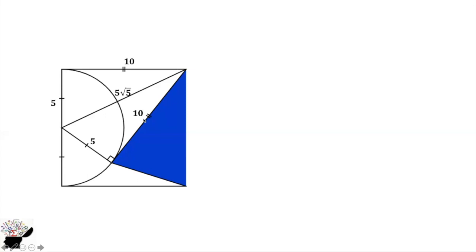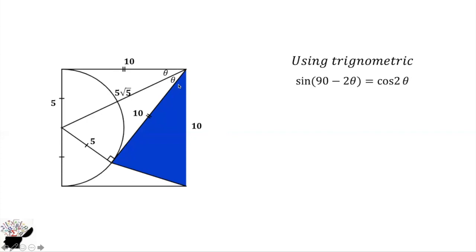This side is also 10 — the same as the length of the square. We assign this angle to be theta. The angles will be the same, and this angle also equals theta. This side is already 10, so we use trigonometry.